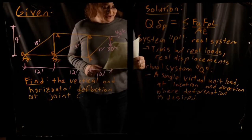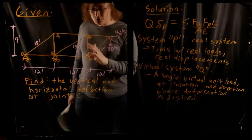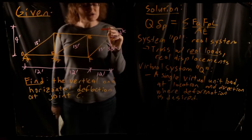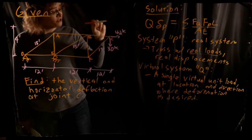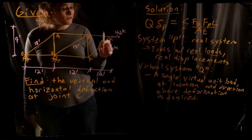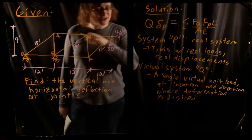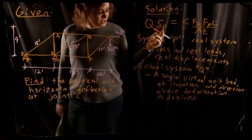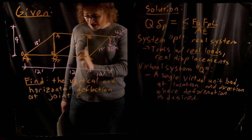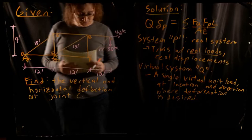For this particular problem, we're actually going to have two virtual systems. To find the horizontal deflection at joint C, we apply a one-kip virtual load horizontally at joint C with no other loads on the structure and find all internal member forces. To find the vertical deflection at joint C, we apply a one-kip vertical load at joint C. Since the problem asks for both vertical and horizontal deflection at C, we have to do two different analyses of our virtual system.